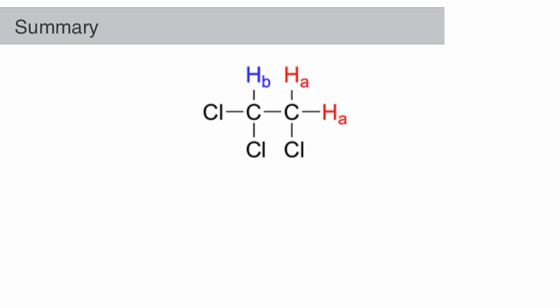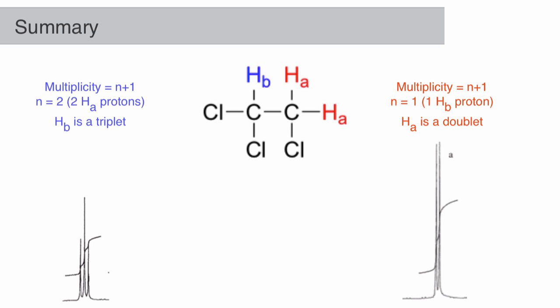Overall, the coupling follows the N+1 rule for simple situations where N is the number of non-equivalent neighboring nuclei. The distance between coupled peaks represents the coupling constant J. The magnitude of this coupling constant is about 7 Hz for simple linear aliphatic systems.